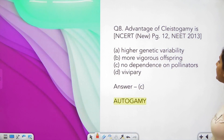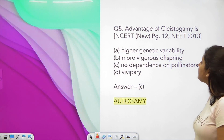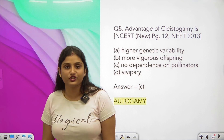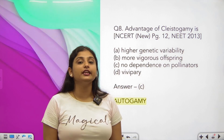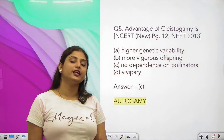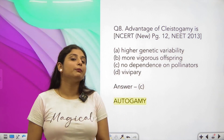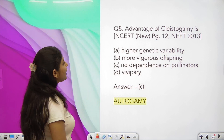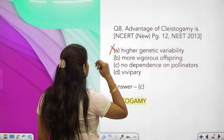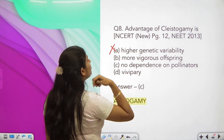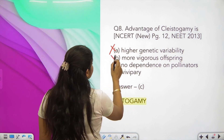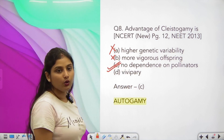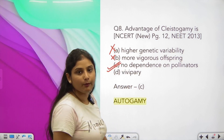Question number 8: what is the advantage of cleistogamy? Cleistogamy refers to closed flowers. The advantage is that they can always self-pollinate — pollinators are not required. Higher genetic variability? No. More vigorous offspring? No. No dependency on pollinators? Yes, this is true. Their pollinators are not required — no dependency on pollinators is the correct answer.